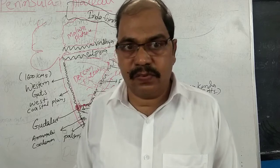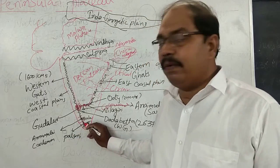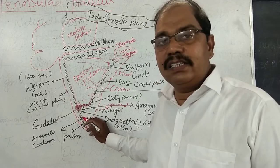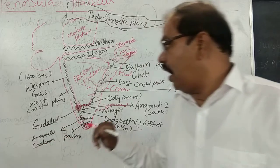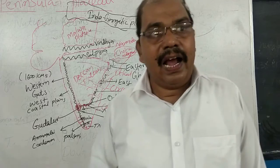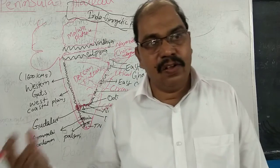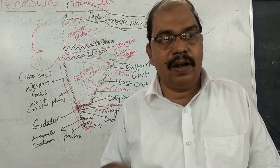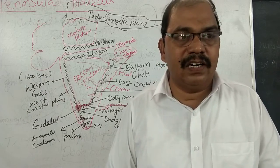The Western Ghats also have regional names. In Tamil Nadu they are called Palani Hills; in Kerala they are called Cardamom Hills and Anaimalai Hills. The Eastern Ghats also have regional names: Nallamalla, Velikonda, Palakonda, and Sheshadri are some of the regional names of the Eastern Ghats.